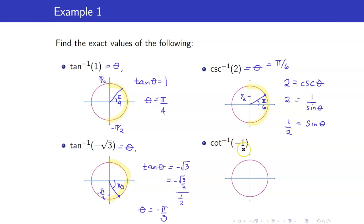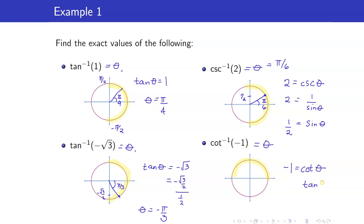Next, we have cotangent inverse of negative 1. For cotangent inverse, the angle lies on the interval 0 to pi. So negative 1 equals cotangent of theta, which means tangent theta equals negative 1. Since tangent is negative, we are in quadrant 2. The angle in quadrant 2 with reference angle pi over 4 is 3 pi over 4. So theta equals 3 pi over 4.